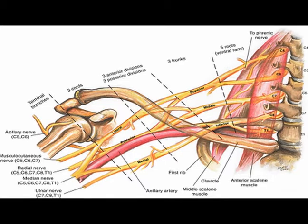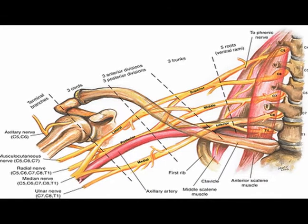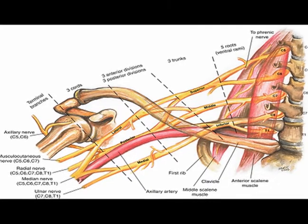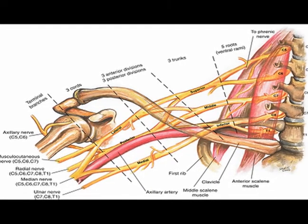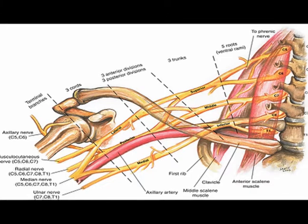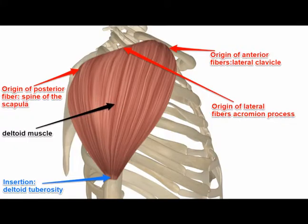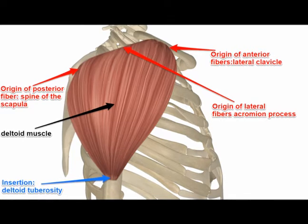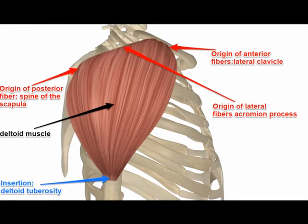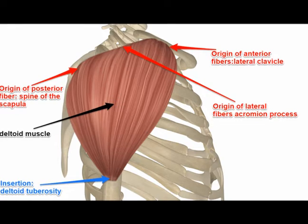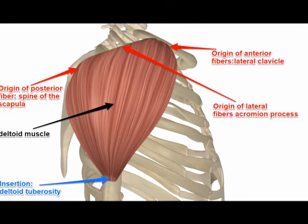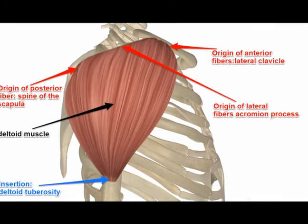The axillary nerve is from vertebral level C5, C6. It originates on the posterior cord of the brachial plexus. It is the motor innervation to the deltoid muscles and to the teres minor muscle, and is the sensory innervation to the skin over the lower half of the deltoid muscle.